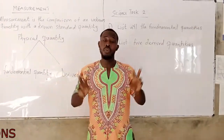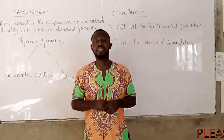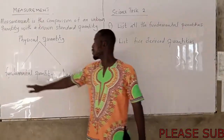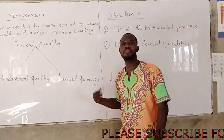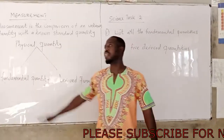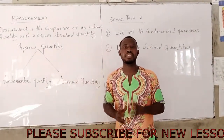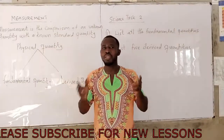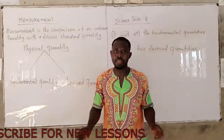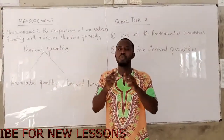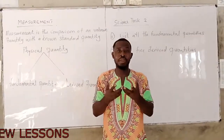Under physical quantity, we have two types of quantities: the fundamental quantity and the derived quantity. A fundamental quantity is a quantity that is independent of other quantities and from which other quantities are formed or derived.